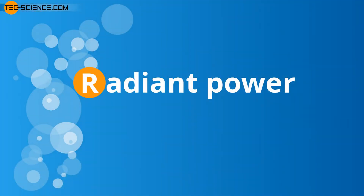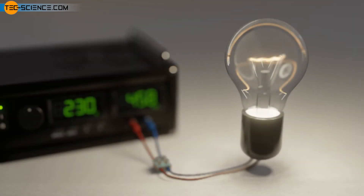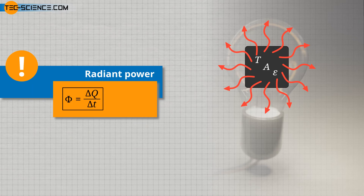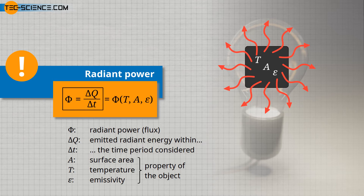As a glowing steel block or a light bulb clearly shows, emitting radiation is obviously associated with emitting energy. How much radiant energy an object emits per unit time — that means how high its radiant power is — depends mainly on the temperature, but also on the surface area of the emitting body as well as on the radiative property of the body, the so-called emissivity. Note that the radiant power, also called radiant flux, does not only refer to the thermal energy in the infrared spectrum or to the radiated energy in the visible wavelength range, but to the entire energetic radiation that a body emits.